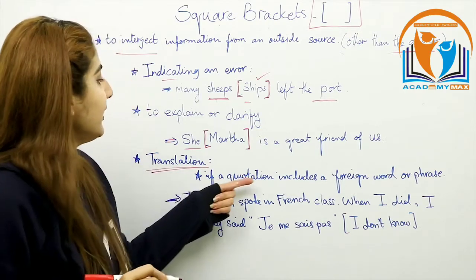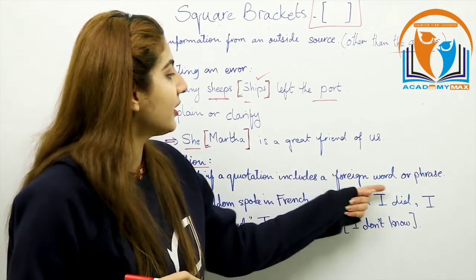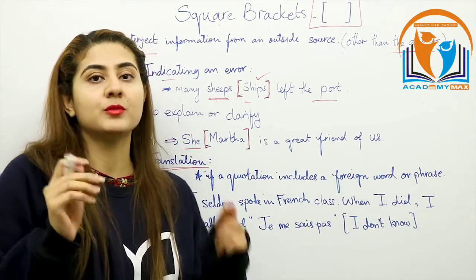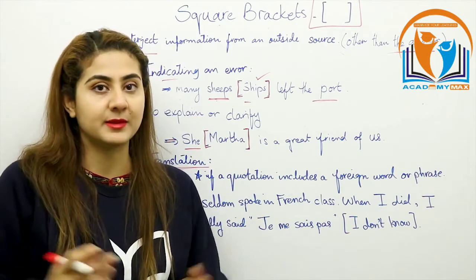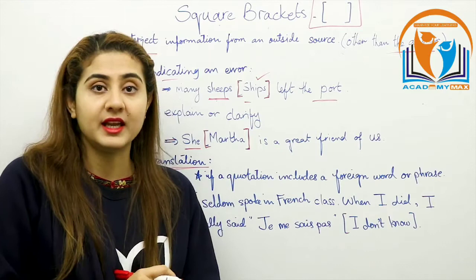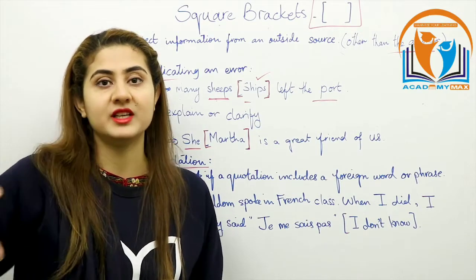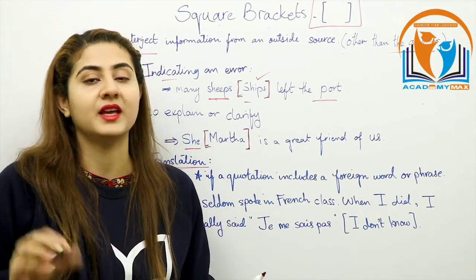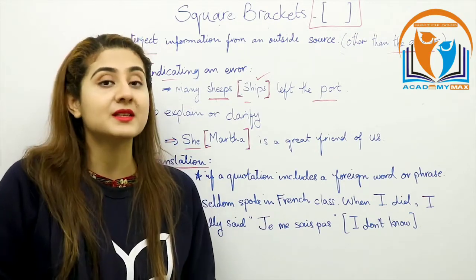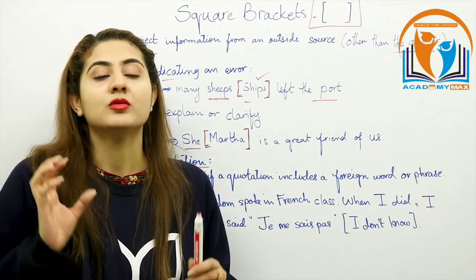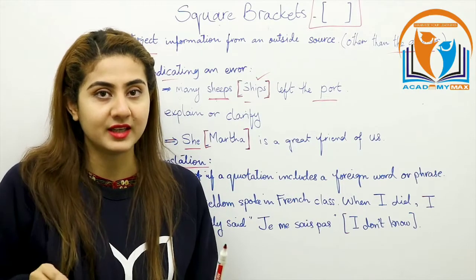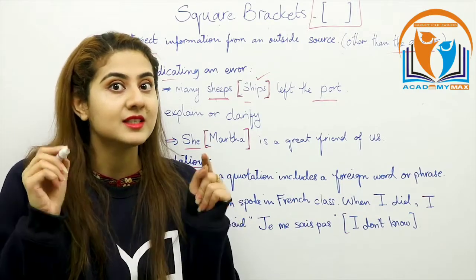Now let's see another use. If a quotation includes a foreign word or phrase — for example, sometimes when learning English there is a quotation in French — we don't know the meaning of that foreign word or phrase. That word or phrase and its translation will also be written in square brackets.